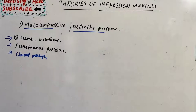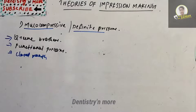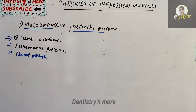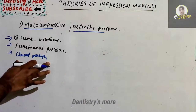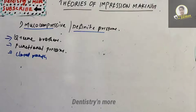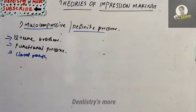Starting with the mucocompressive or definitive pressure technique, it was introduced by the Green brothers. The tissue is recorded at functional pressure, which they claim provides better support and retention for the denture. It is commonly used in the closed mouth technique, and it was believed that the occlusal loading during impression making is comparable to the occlusal loading during function — that is how they justify this technique.